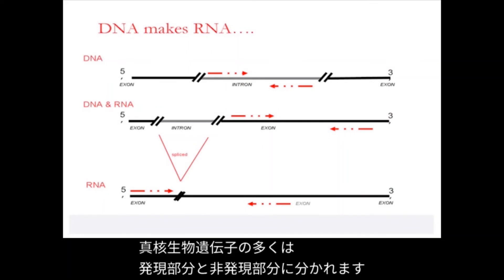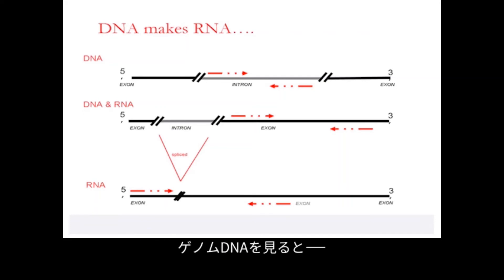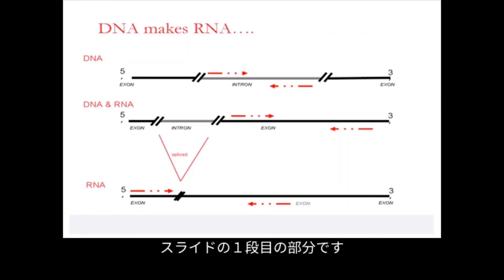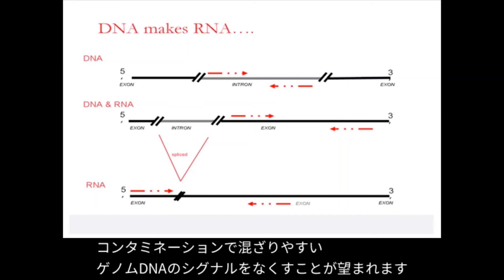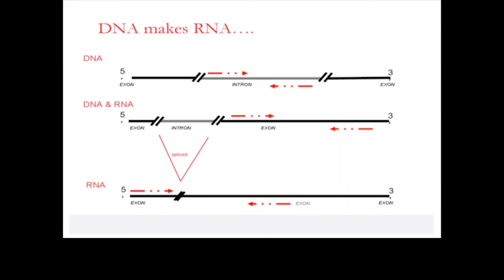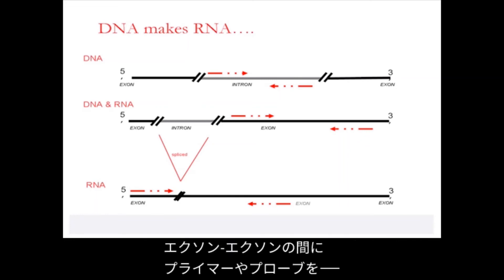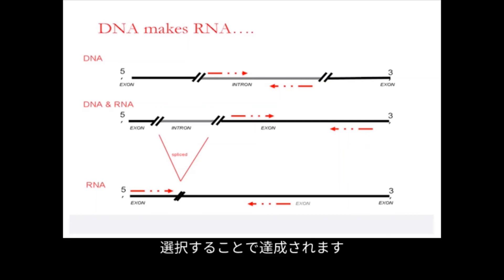Many eukaryotic genes are divided into both expressed and non-expressed segments. If you're interested in looking at genomic DNA, assays might be designed within intronic regions of the gene. Typically for gene expression studies, however, one would prefer to avoid any signal from genomic DNA that might contaminate your preparation. So it is preferable to design primers and probes against the transcript in the absence of any intronic sequences. This may be accomplished in many cases by picking a primer or probe that bridges an exon-exon boundary.